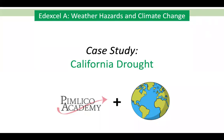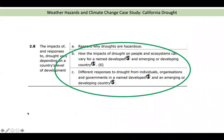Hello and welcome to this video on the California drought. This is a case study studied during the weather hazards and climate change topic, which is part of the physical geography paper in the Edexcel GCSE geography exam. Specification point 2.8 states that the impacts of and responses to drought vary depending on the country's level of development. We're particularly interested in how the impacts on people and ecosystems vary for a named developed and emerging or developing country, and how different responses come from individuals, organizations and governments. The California drought covers our named developed country — California is in the USA, which is categorized as a developed country.